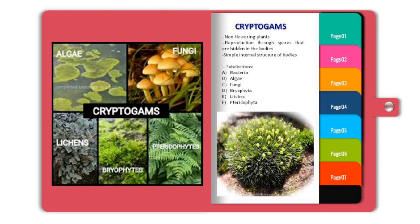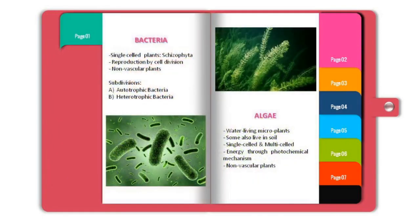Cryptogames can further be subdivided into diverse forms such as bacteria, algae, fungi, bryophyta, lichens, and pteridophyta. Let us see one by one. Bacteria are single-celled plants.